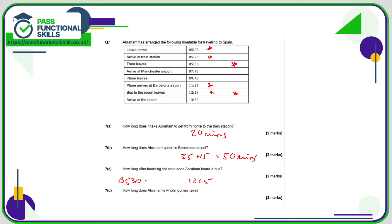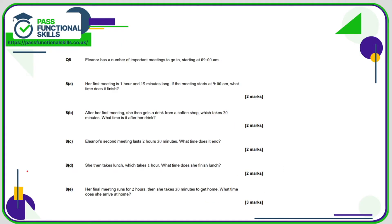To calculate the difference between 5:30 and 12:15: rounding to 6 o'clock gives a 30-minute gap, then 6 hours to midday, plus another 15 minutes — so 6 hours plus 45 minutes total. How long does Abraham's whole journey take? It goes from 5 until 13:30: the difference between 13 and 5 is 8, so 13:30 and 5:00 is eight and a half hours — 8 hours 30 minutes.